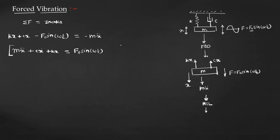Rearranging, the equation is mẍ + cẋ + kx = F₀ sin(ωt). This is the basic equation of forced vibration, where mẍ is the inertia force, cẋ is the damping force, kx is the spring force, and F₀ sin(ωt) is the external harmonic force. Because of this force the system oscillates continuously. Our aim is to find the effect of this harmonic force on the displacement of the mass, so we want to find the equation for x.